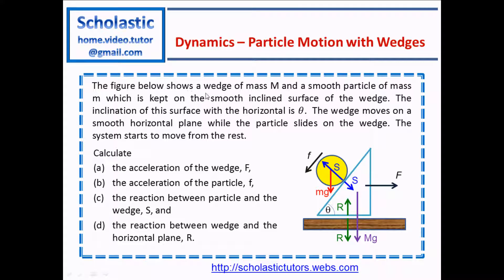The figure below shows a wedge of mass capital M and a smooth particle of mass simple M, which is kept on the smooth inclined surface of the wedge. The inclination of this surface with the horizontal is theta. The wedge moves on a smooth horizontal plane while the particle slides on the wedge.